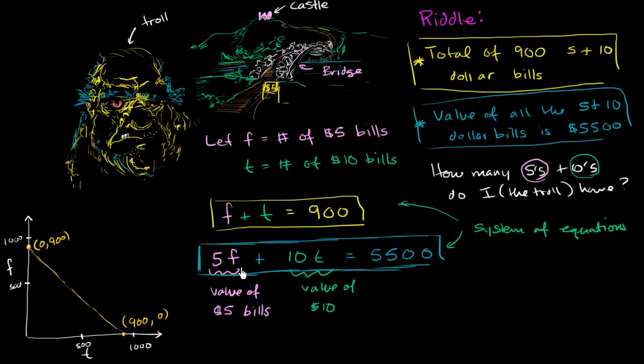Let's do the same thing. In this constraint, what happens if we have no tens? If tens are 0, then we have 5f equals 5,500. Let me do a little table here because this is a little more involved. For the second equation: tens and fives. If I have no tens, I have 5f equals 5,500, so f will be 1,100 - I must have 1,100 fives. If I have no fives and this is 0, and I have 10t equals 5,500, that means I have 550 tens.